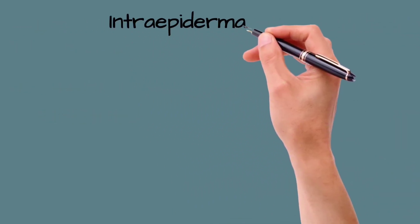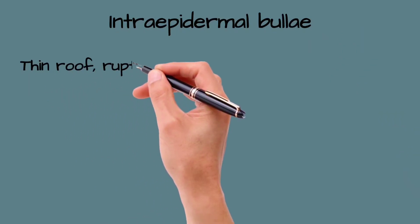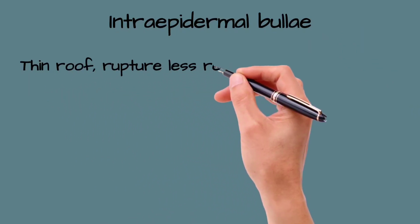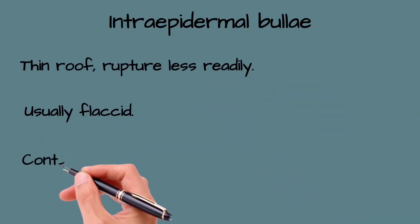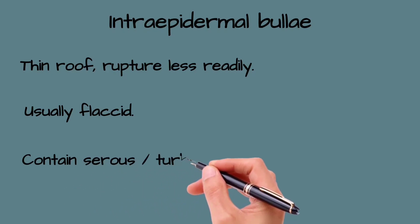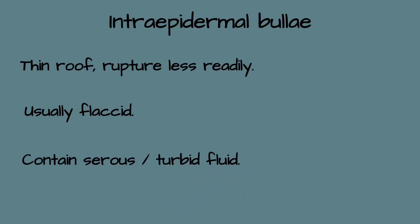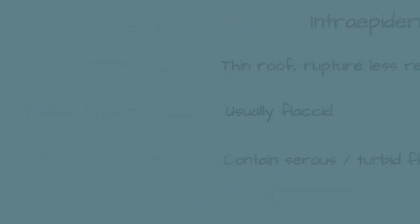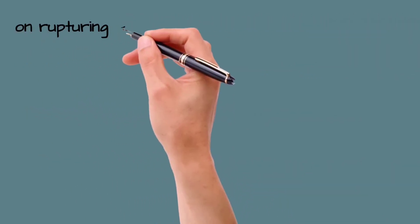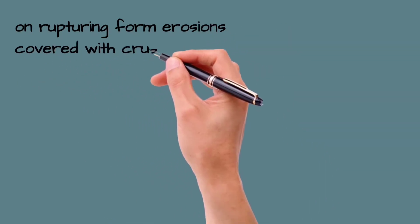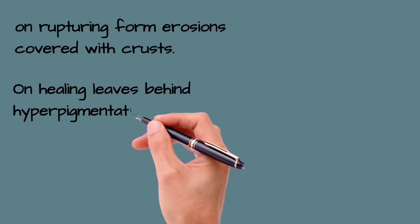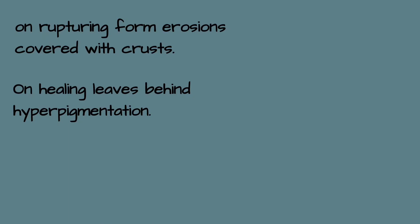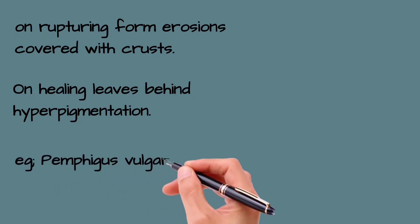Intraepidermal bullae have a thin roof, so they rupture less readily. They are usually flaccid and contain serous or turbid fluid. On rupturing, they form erosions covered with crust, and on healing leave behind hyperpigmentation. An example is pemphigus vulgaris.